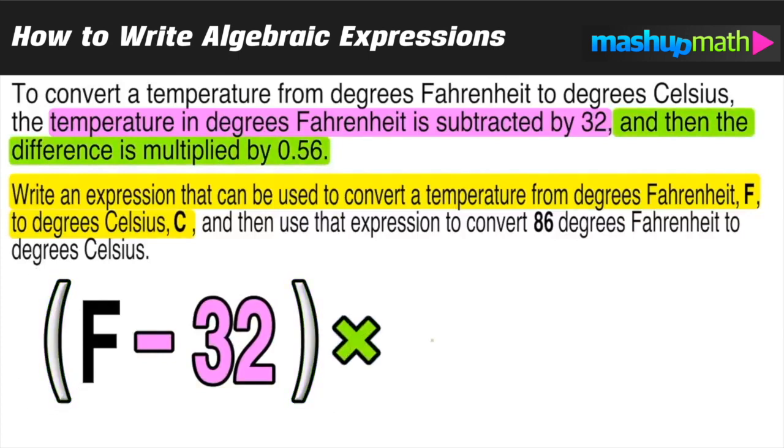So we have to subtract 32 from F and then take that whole difference, so we're going to wrap it up in parentheses and multiply that entire difference by 0.56. Now keep in mind, if you forget those parentheses this will not be correct, because then you would only be multiplying that minus 32 by 0.56 and not the whole difference. So the parentheses are very important here.